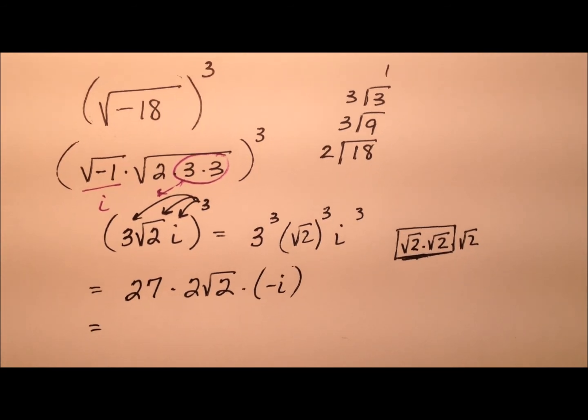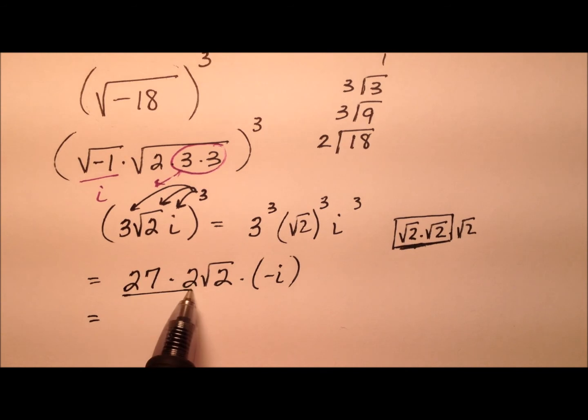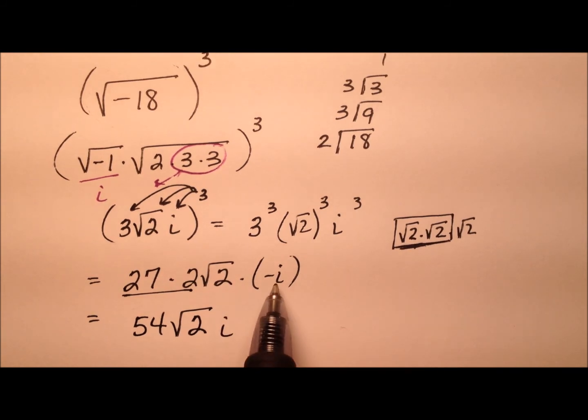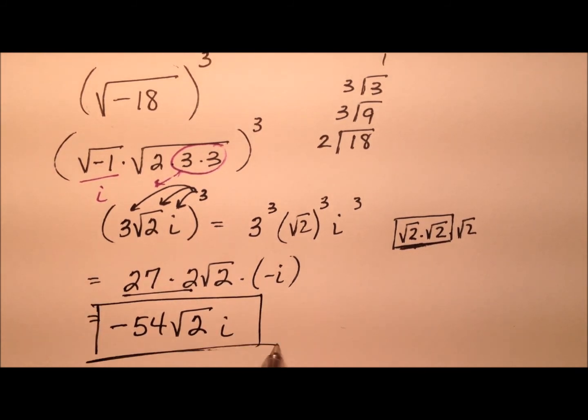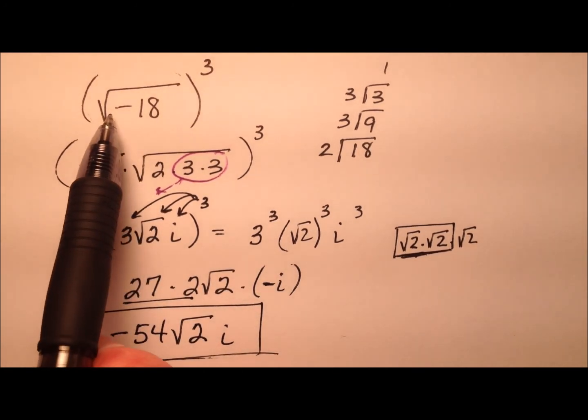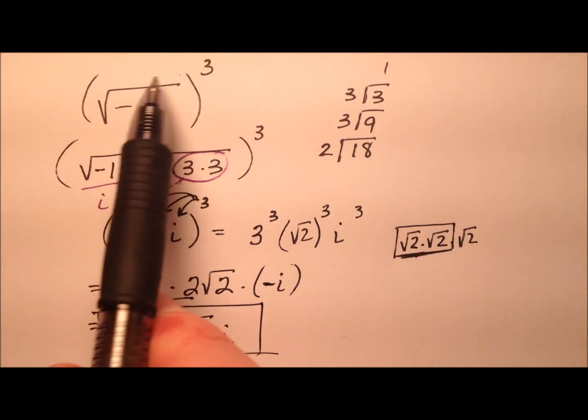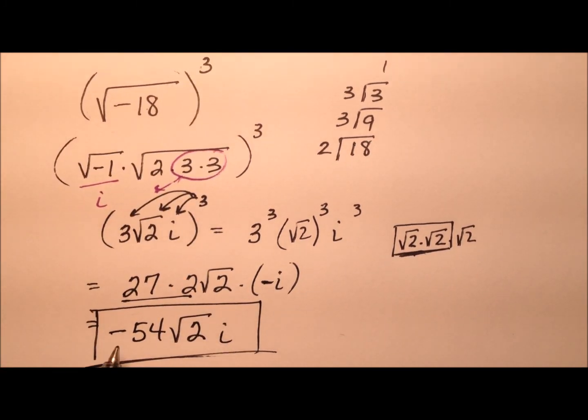So this whole thing now becomes 27 times 2, which is 54 times the square root of 2 i, but then we have the negative out front because of the negative right here. So our initial expression of the square root of negative 18 and that being cubed comes out to be negative 54 radical 2 i.